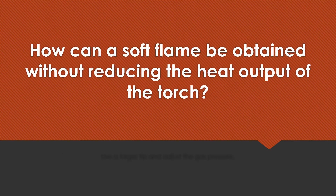How can a soft flame be obtained without reducing the heat output of the torch? You could use a larger tip and adjust your gas pressure.